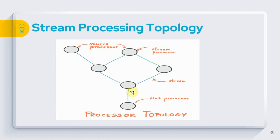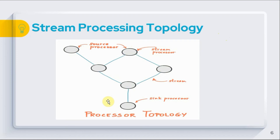This is how a processor topology looks like. The nodes represent stream processors while the edges represent streams. At the top we have the source processor, which does not have any upstream processor — its job is to source data from Kafka topics. At the bottom we have the sink processor, whose job is to sink data coming from its upstream processor to a Kafka topic.